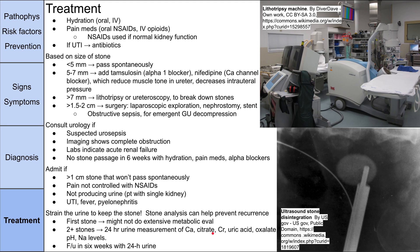Now let's talk about the treatment for kidney stones. For almost all patients, you want to ensure hydration — drinking lots of water or IV fluids if inpatient — to help pass the stone and prevent future ones. You want to give pain medications, starting with oral NSAIDs; if pain is severe, IV opioids can be used, but check for normal kidney function before giving NSAIDs. If you suspect a UTI based on urinalysis findings, give antibiotics.